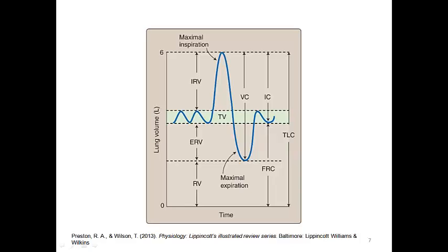Let's look at lung volumes and lung capacities. This diagram is very important and will likely appear on the test — we also did the spirometry example in the lab. Tidal volume is the regular amount of air that enters the lung during each normal breath. The inspiratory reserve volume is the volume of air you can inhale above a normal breath. The expiratory reserve volume is the amount of air you can exhale beyond a normal exhalation.